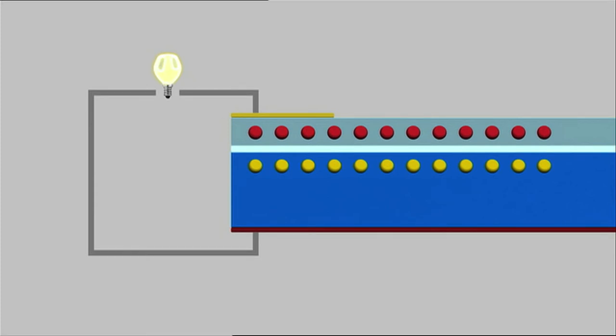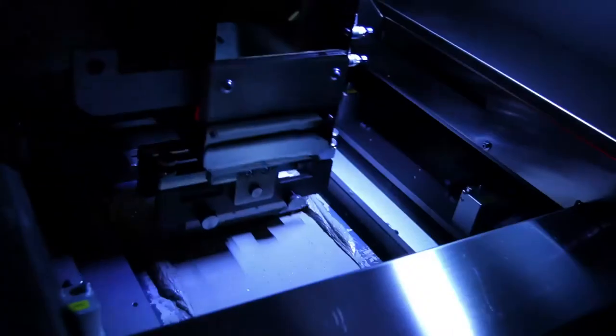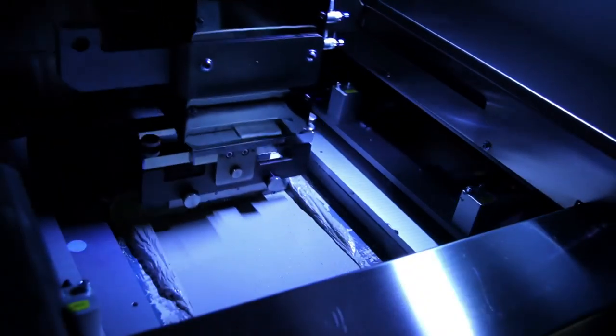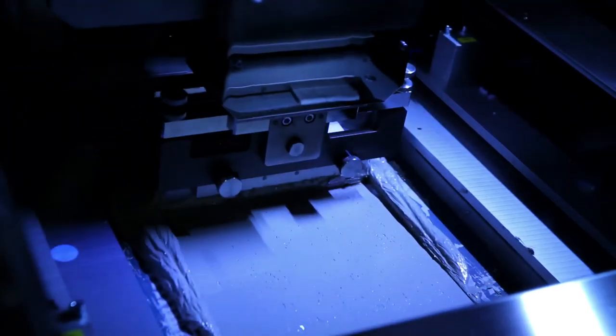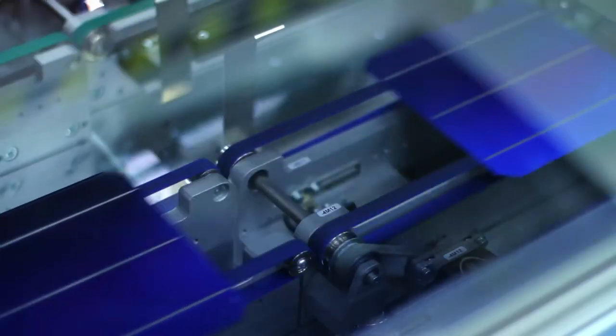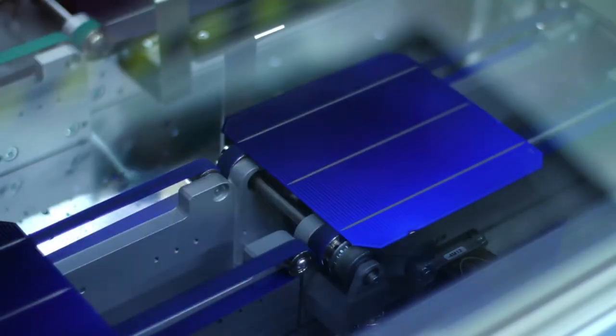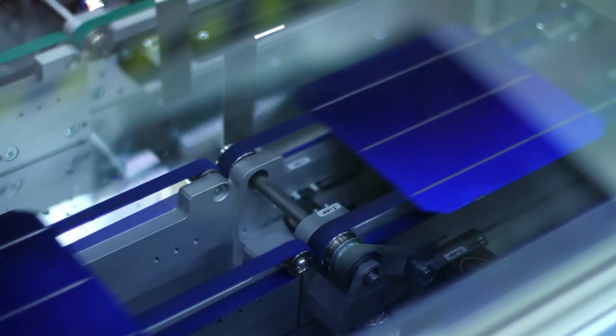A stamp presses a silver alloy onto the front of the cells, creating the typical grid pattern. This silver coating ensures that the power can be transported later on.